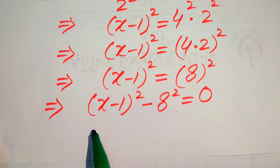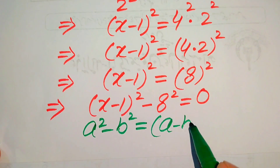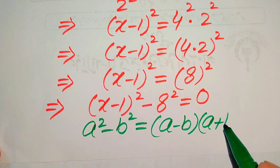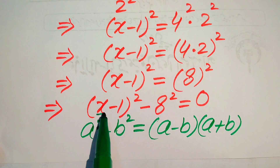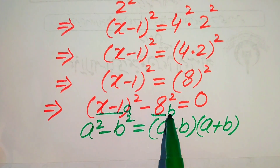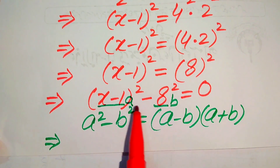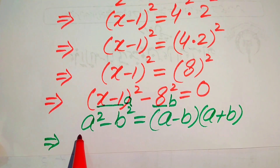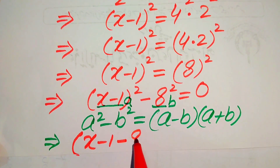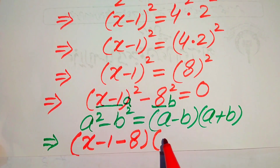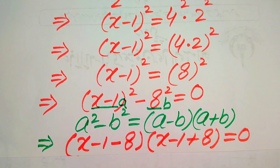We apply the algebraic formula: a squared minus b squared equals (a minus b)(a plus b). Here, a is (x minus 1) and b is 8. According to this formula, we expand the equation as (x minus 1 minus 8) times (x minus 1 plus 8) equals 0.